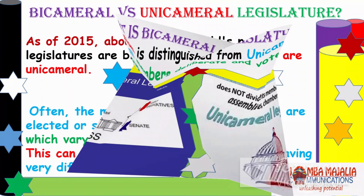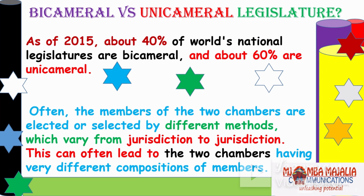As of 2015, about 40% of the world's national legislatures are bicameral and about 60% are unicameral, so unicameral is still quite popular. Often the members of the two chambers are elected or selected by different methods, which vary from jurisdiction to jurisdiction, and this can often lead to the two chambers having different compositions of members.